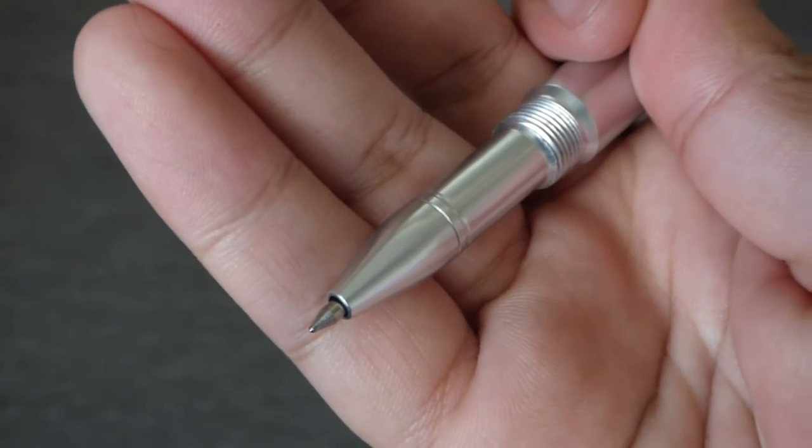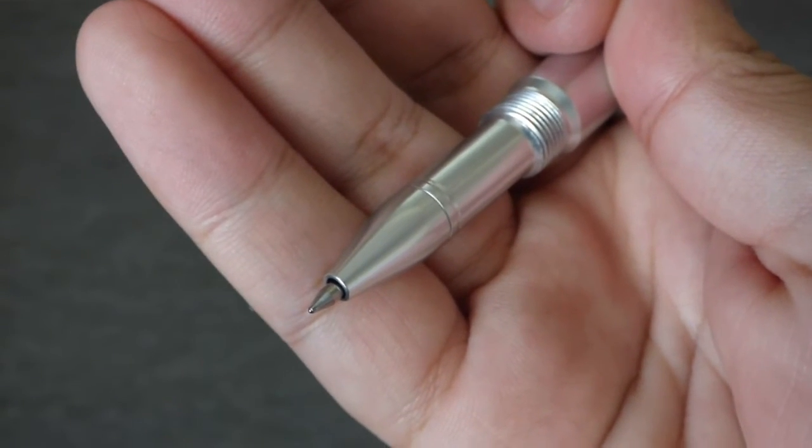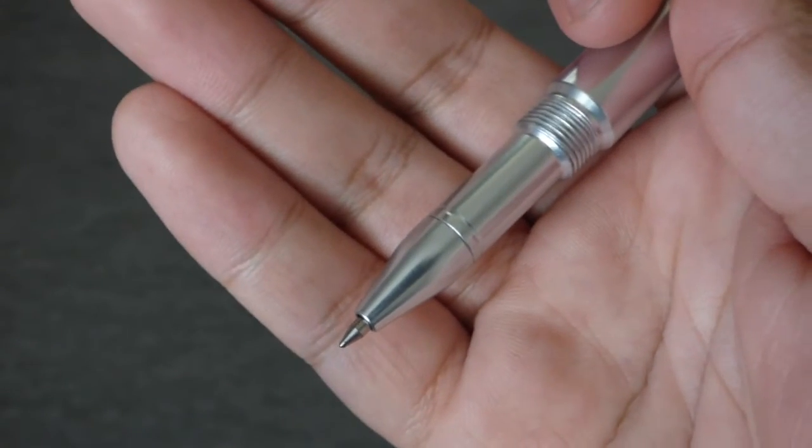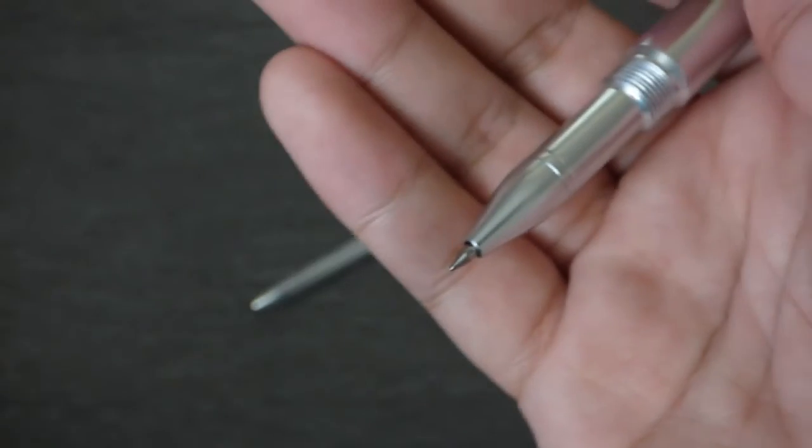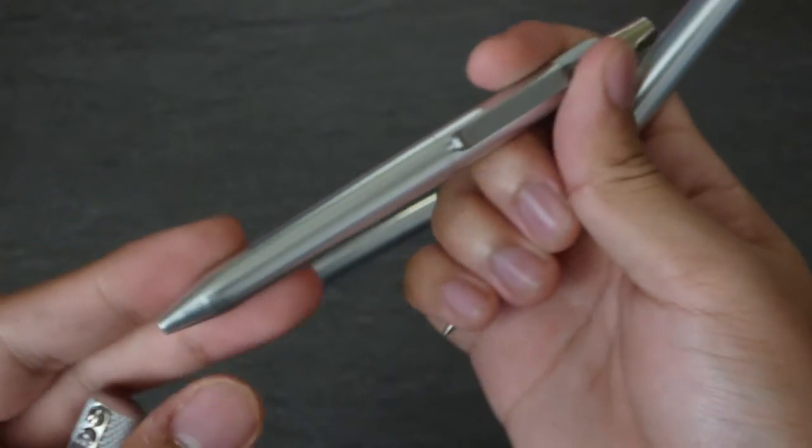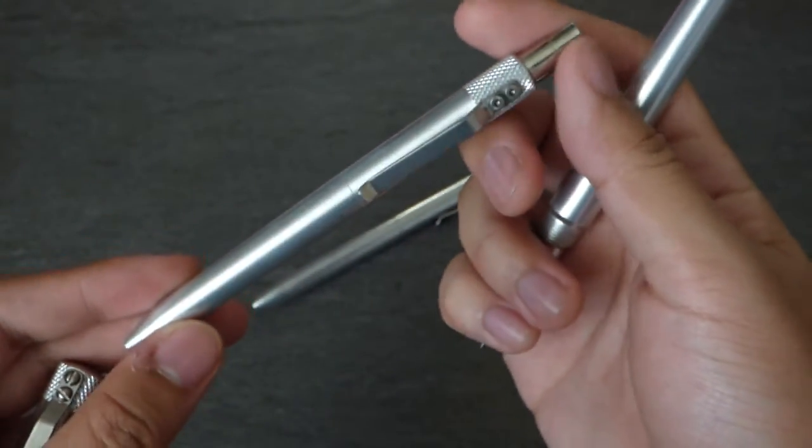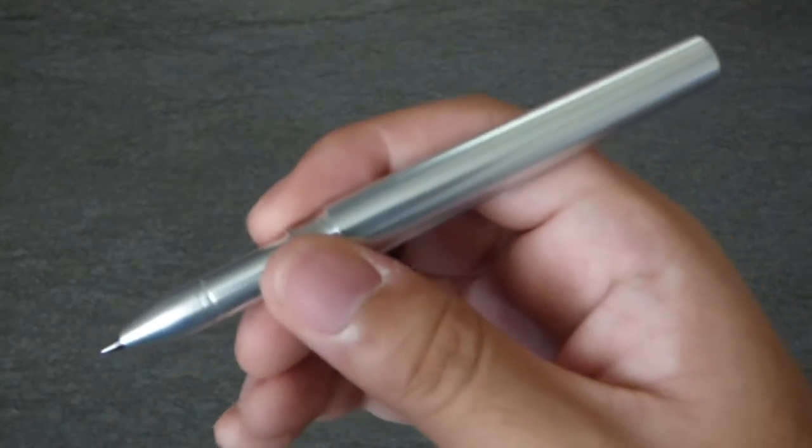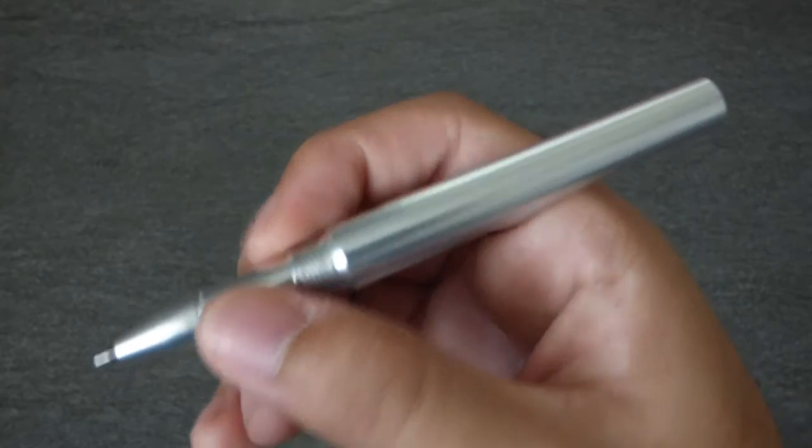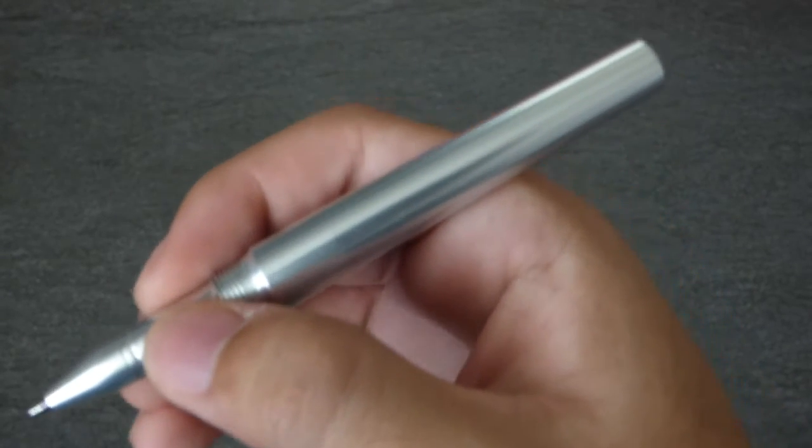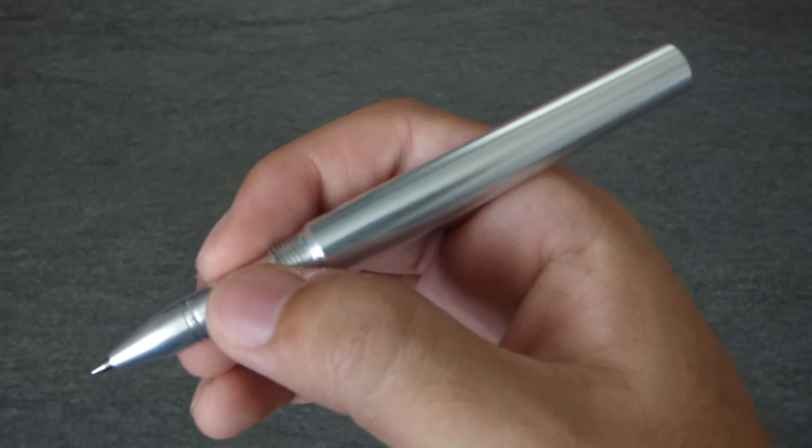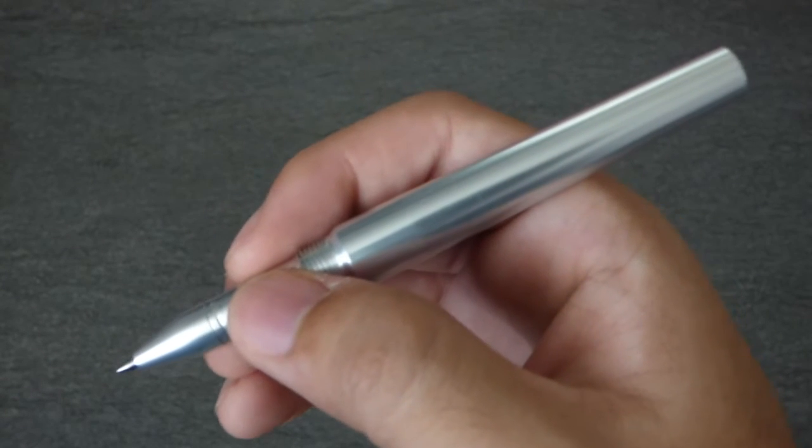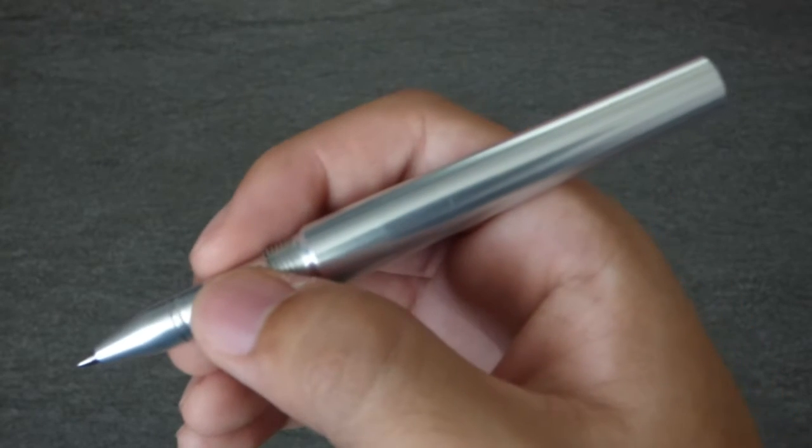As you see here, I have a Uniball Signo red 0.7 millimeter refill, it's a gel, and it works very well in this pen. Because if I put it into, I tried putting into the retract and just for some reason it wasn't staying in. It felt like it had something to do with the button. And there's also the Tool refills, if you know Tool. Their pens are being sold and the refills are being sold at Office Max if you go there. And I actually really like those refills.